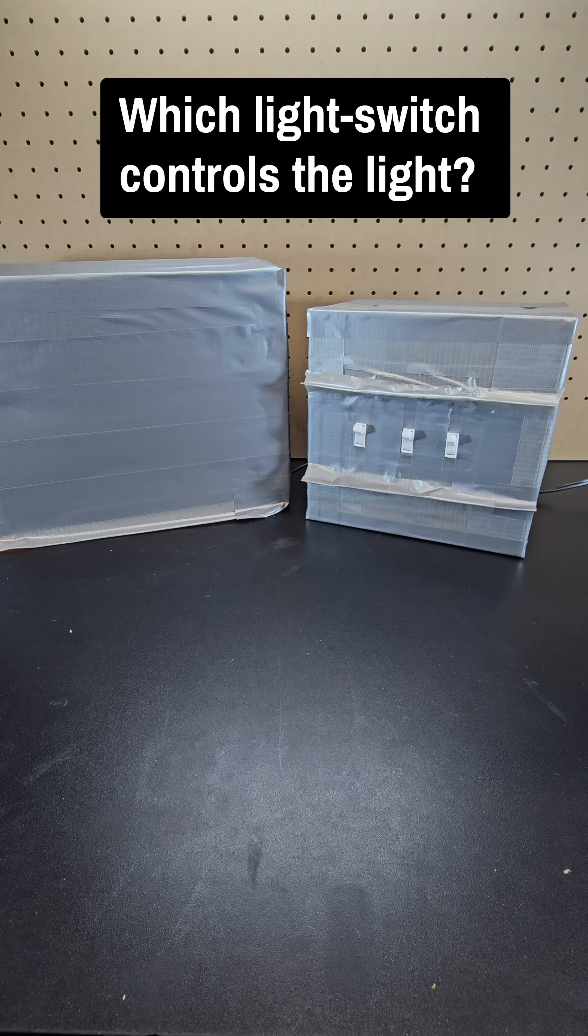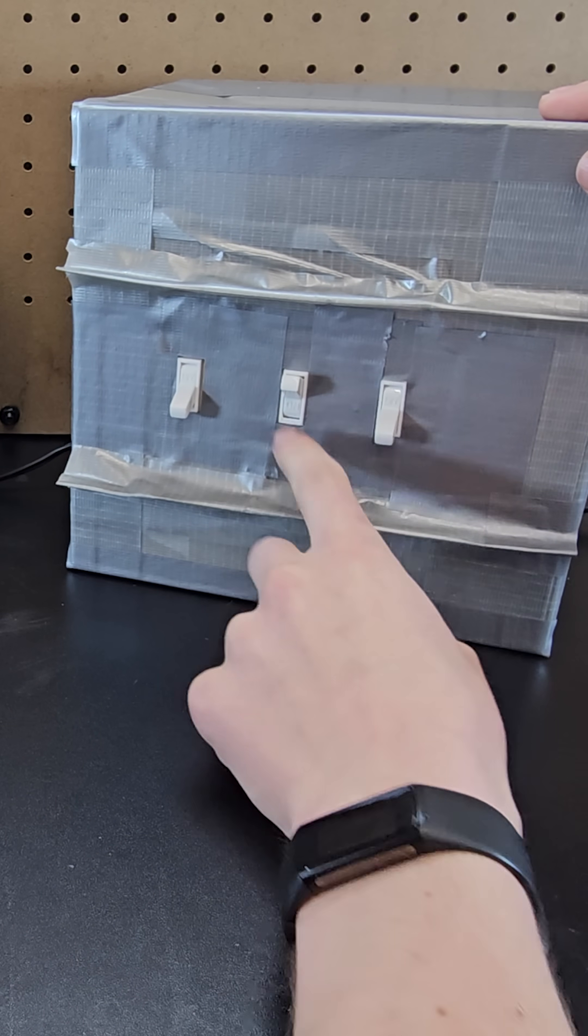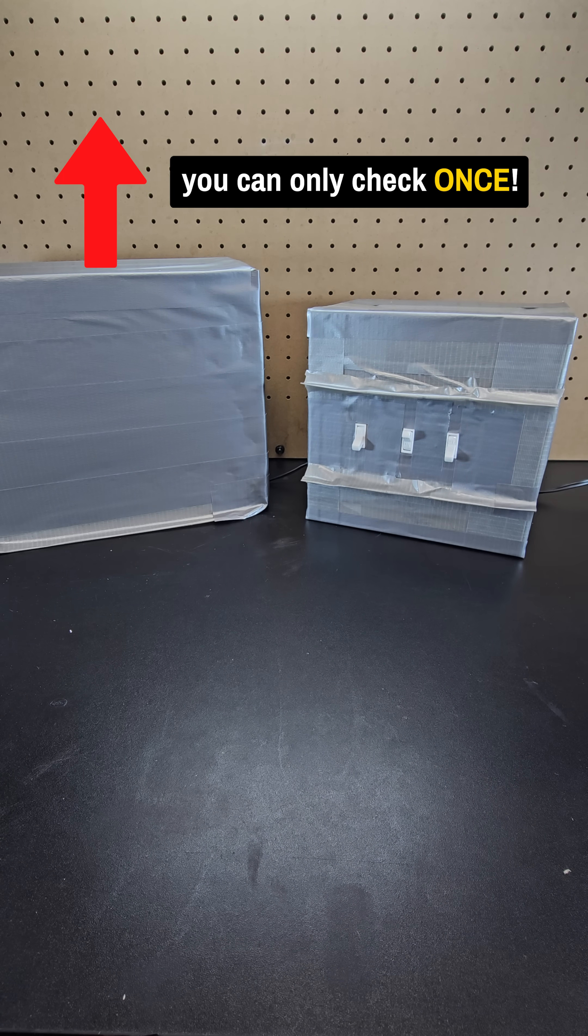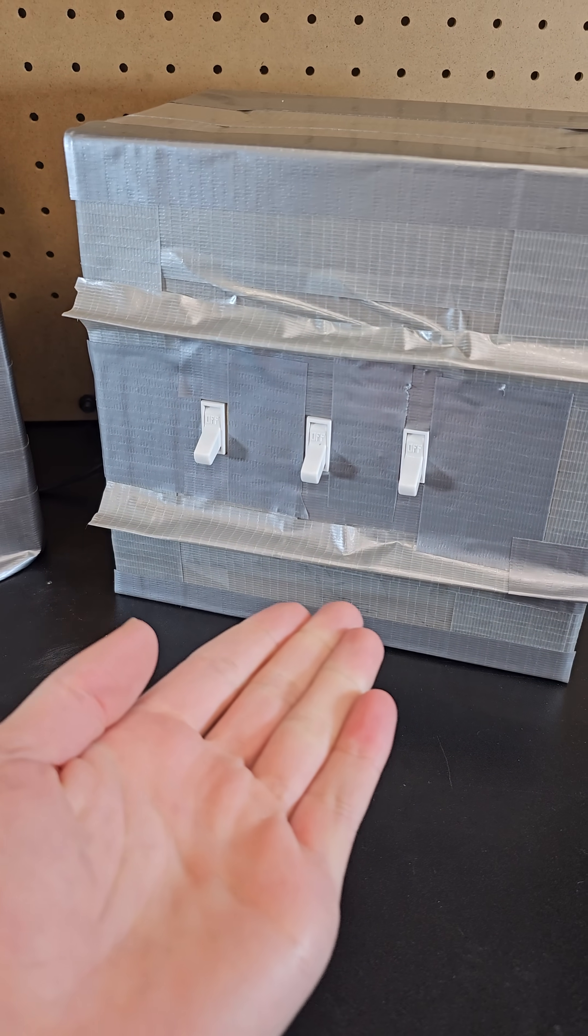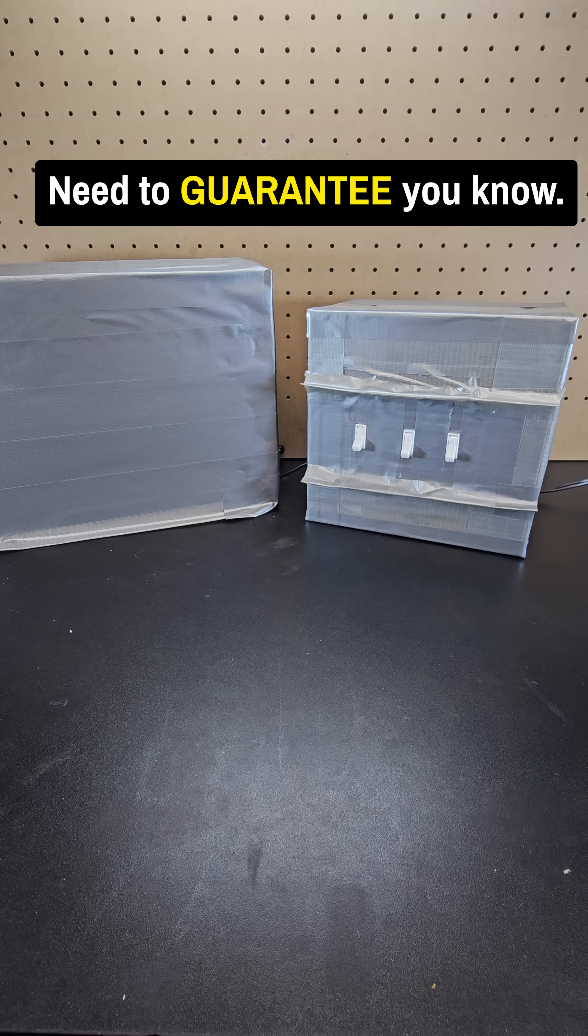You need to determine which light switch controls the light, and you can adjust the light switches however you want, but the catch is you can only lift the cover up to check on the light bulb once. So how would you flip these switches such that you'd guarantee you'll know which one that is?